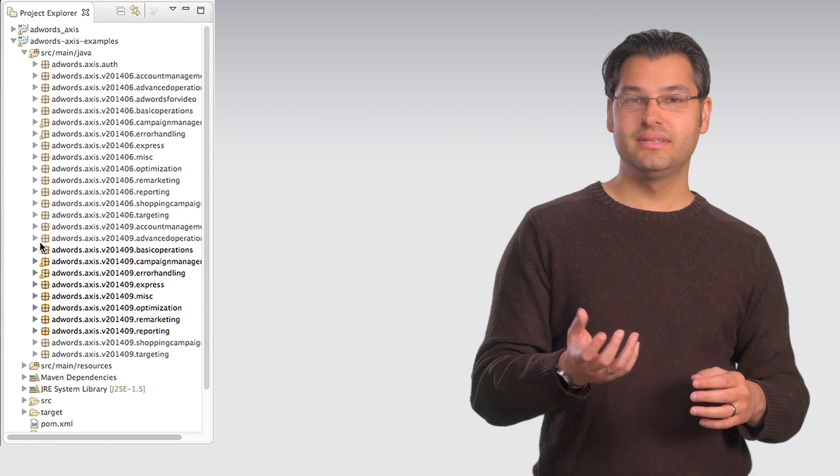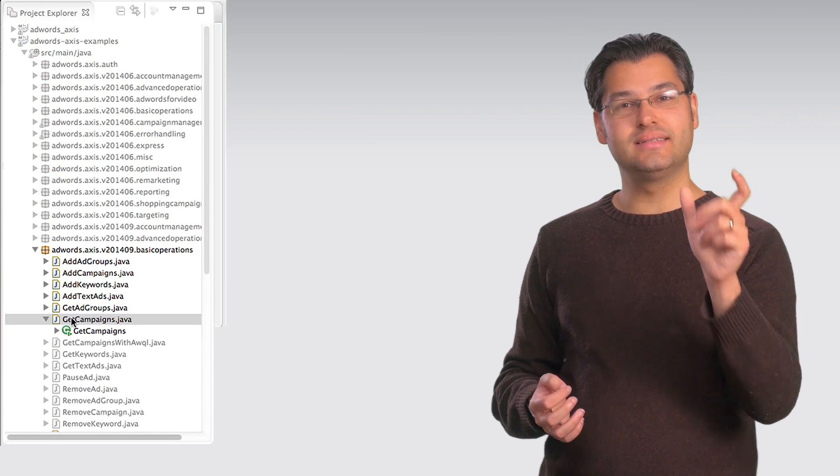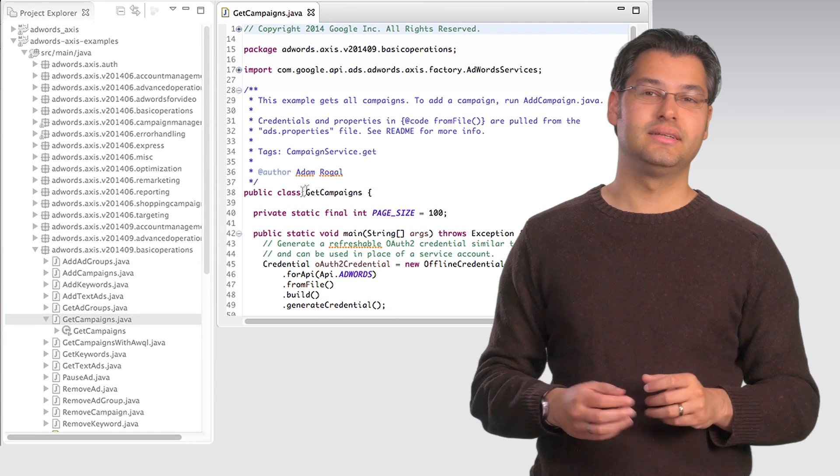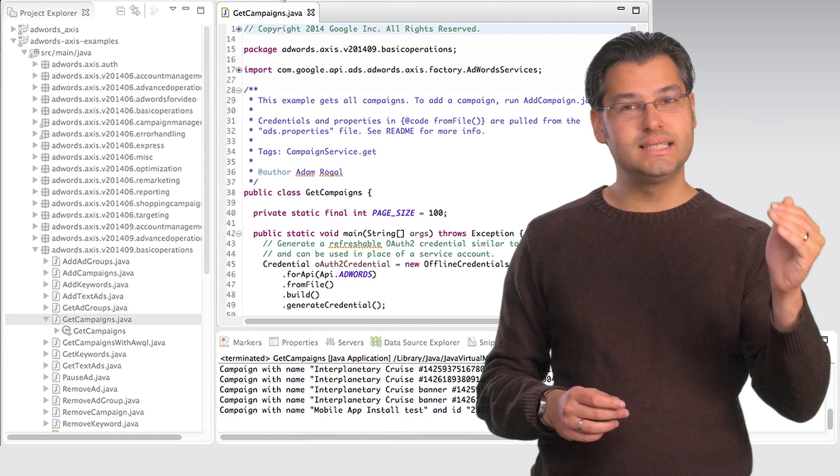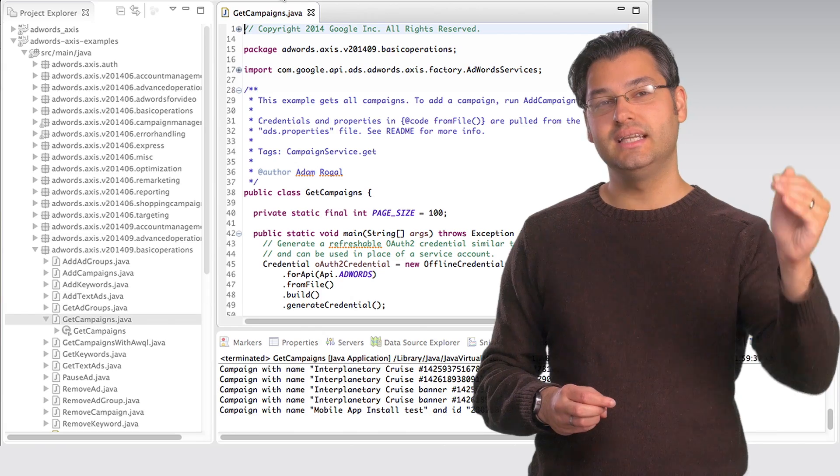So, in Eclipse, open up getCampaigns.java and execute it. The console should print a listing of the test campaigns in your test account. Congratulations, you just made an API call with the client library.